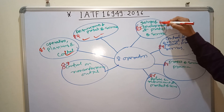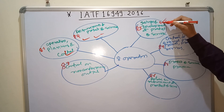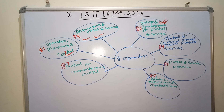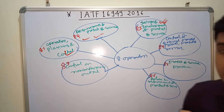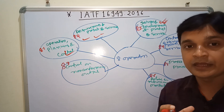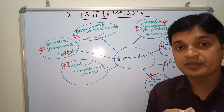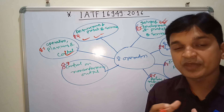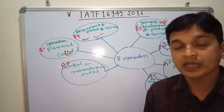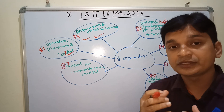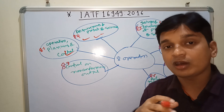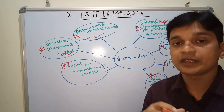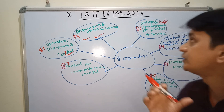Sub-clause 8.3 is Design and Development of Product and Service. This is a very important and very big sub-clause. It basically deals with DFMEA, APQP phases, design input, and design output — all of these things are included in this clause.